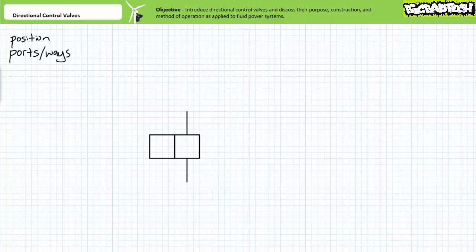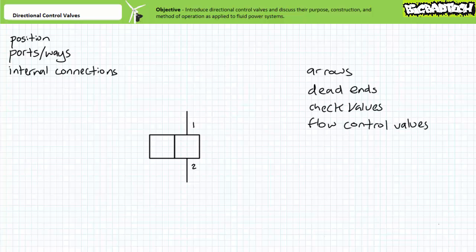Ports or ways are the entry and exit points to a valve. This is a two-position, two-way valve. Different manufacturers and applications might use different labels; however, we'll just call these ports one and two. Internal to the position boxes, directional control valves use a range of symbols to represent selectively connected or disconnected ports.